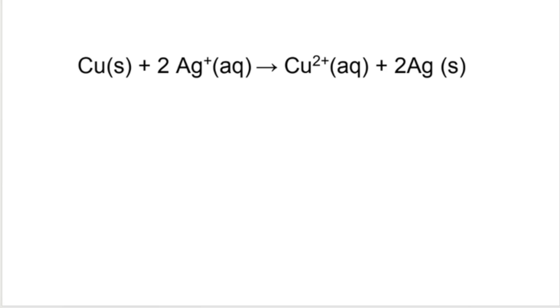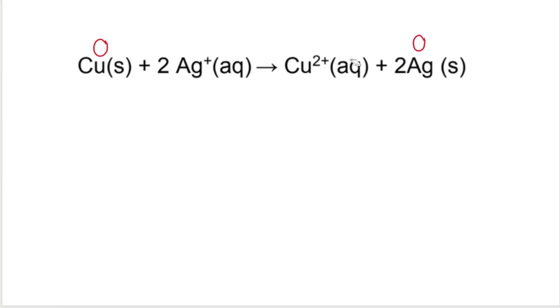Remember to check out my video on oxidation numbers if this still confuses you, but essentially we know that if an element stands by itself, even if it's diatomic — in this case it's copper — its oxidation number is zero. So copper has an oxidation number of zero, and so does silver over here. Even though it has a big two in front of it, this doesn't influence it. The oxidation number of silver, Ag, is zero.